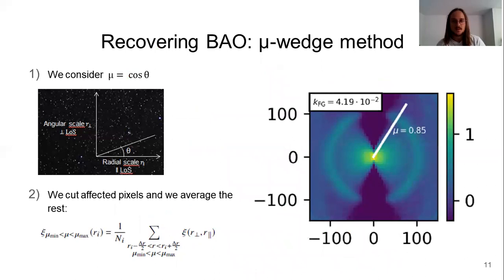Now, we will introduce several methods in order to isolate the BAO, which is the purpose of this paper. The first one is the mu wedge. If you remember, mu is the cosine of theta, which is the angle between the line of sight and a particular mode. Then the idea is to cut measurements with a value of mu that is heavily affected by either the telescope beam or the foreground removal.